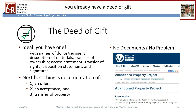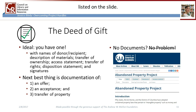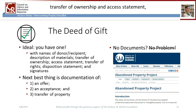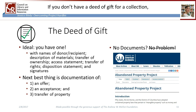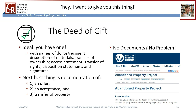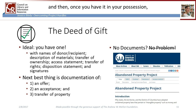Ideally, you already have a deed of gift that includes all of the elements listed on the slide: names of donor and recipient, description of the materials, transfer of ownership, an access statement, transfer of rights, a disposition statement, and definitely signatures. If you don't have a deed of gift for a collection, the next best thing is some kind of documentation saying basically: 'I want to give you this thing,' to which you reply, 'I will totally take that thing,' and then once you have it in your possession, you say, 'Thanks for giving me this thing.'